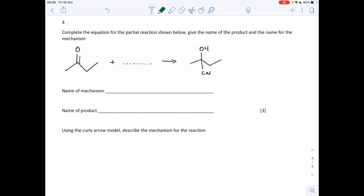And the final question: complete the equation for this partial reaction shown below, give the name of the product and the name for the mechanism. Just look at what atoms have changed. We've gone up by a hydrogen and a CN, so it's HCN. The name of that mechanism is nucleophilic addition.